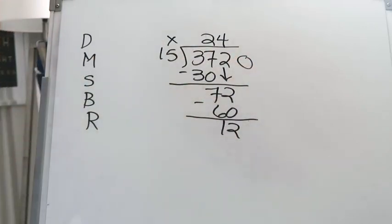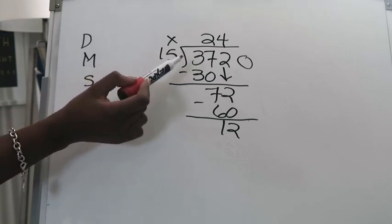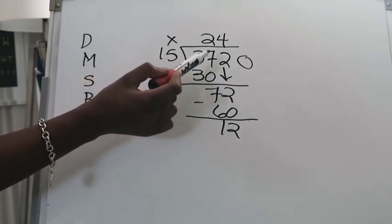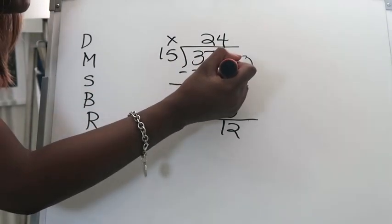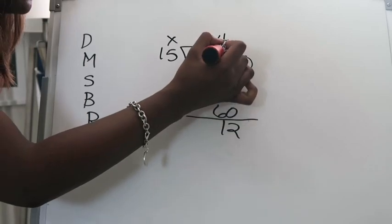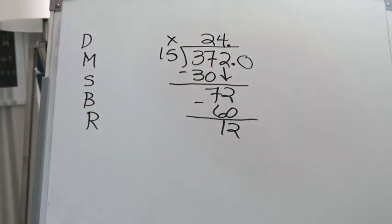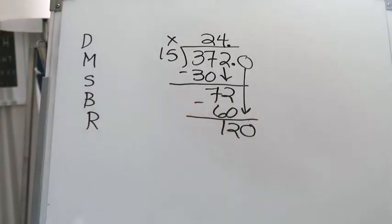You have to add that decimal point because if you don't the value of that dividend would change. If I just put a zero there with no decimal point now I'm not dividing 372, I'm dividing 3720 which is a totally different problem. So the decimal point being placed before the zero is very important and if you place it there I would just go ahead and place it at the top in your quotient and then you're going to bring the zero down just so that you can finish out the problem.